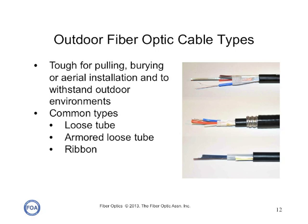Outdoor cables must be much more rugged — they have to be pulled, buried, or installed aerially, and must withstand the environment in which they will be installed. The common types are what we call loose tube cables, where the fibers are enclosed in a small plastic tube. That cable can be armored, as the cable in the center shows, to protect it from damage after it's buried directly in the ground, including damage from rodents chewing on the jacket. Ribbon cables lay all the fibers out in a ribbon, creating a cable with much higher density — more fibers in a smaller cable.